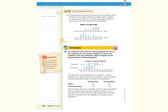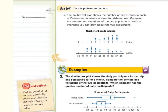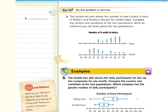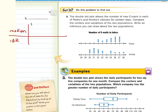Our Got It question B does not deal with symmetry. The double dot plot shows the number of new emails in each of Pedro's and Anika's inboxes for 16 days. Compare the centers and variations of the two populations and write an inference. As you look here, they're not symmetric. So we're going to use the median and the interquartile range to compare — for Pedro and for Anika.